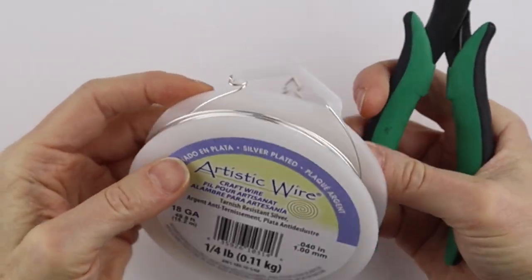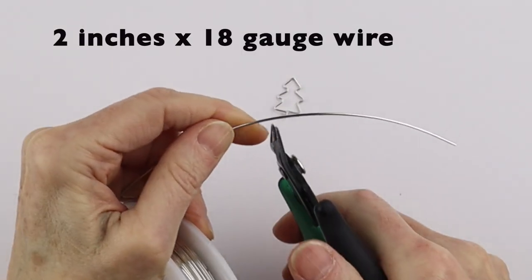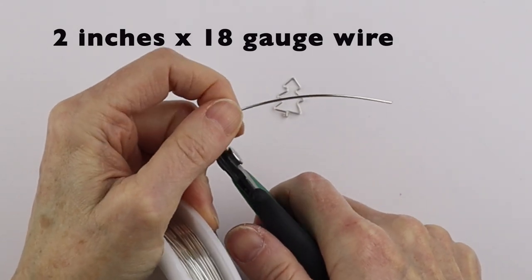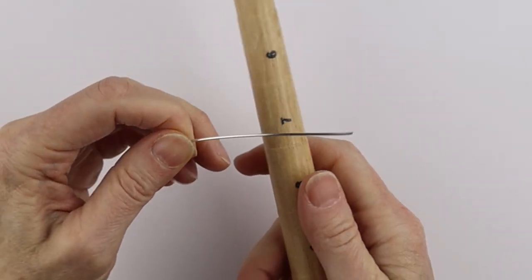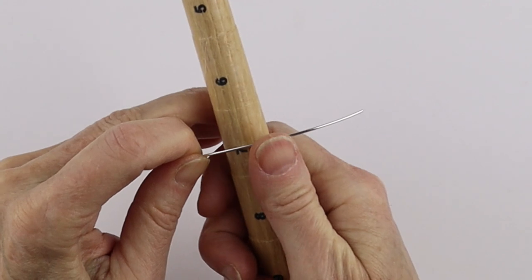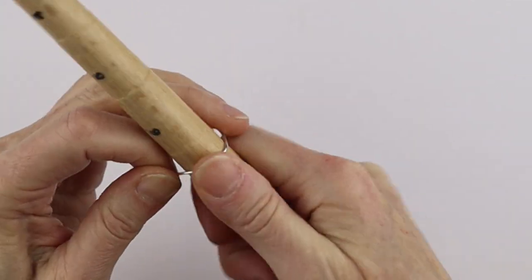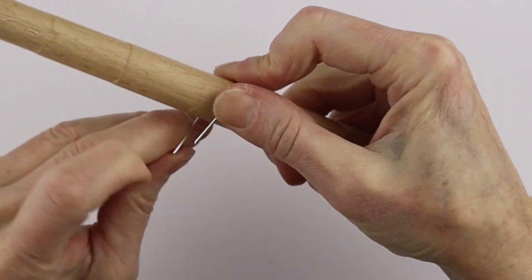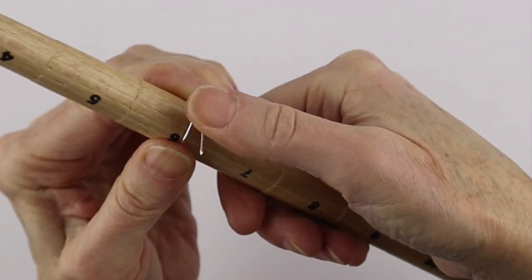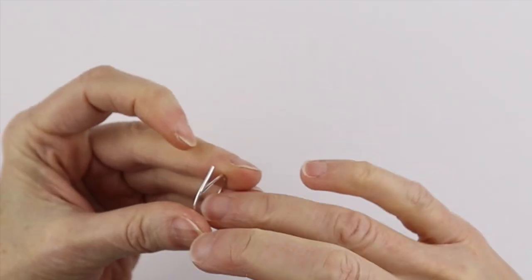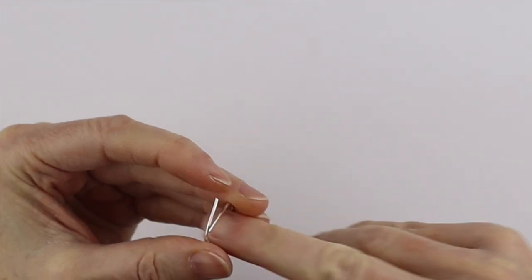For the band we're going to use 18 gauge wire. You just need a couple of inches depending on how big your finger is. We'll get the ring cone. And we're just going to measure this around. Just wind it around here. Depends what size you want your ring to be. You can try it on your finger to be sure.